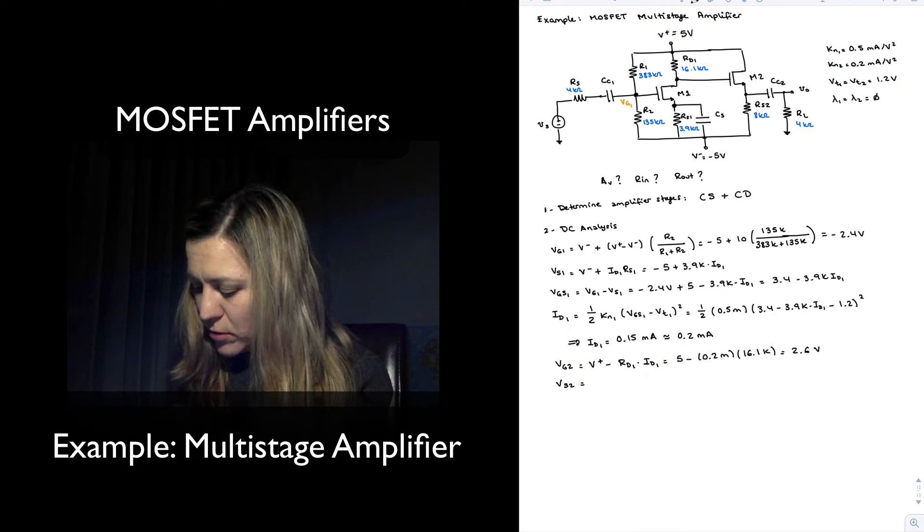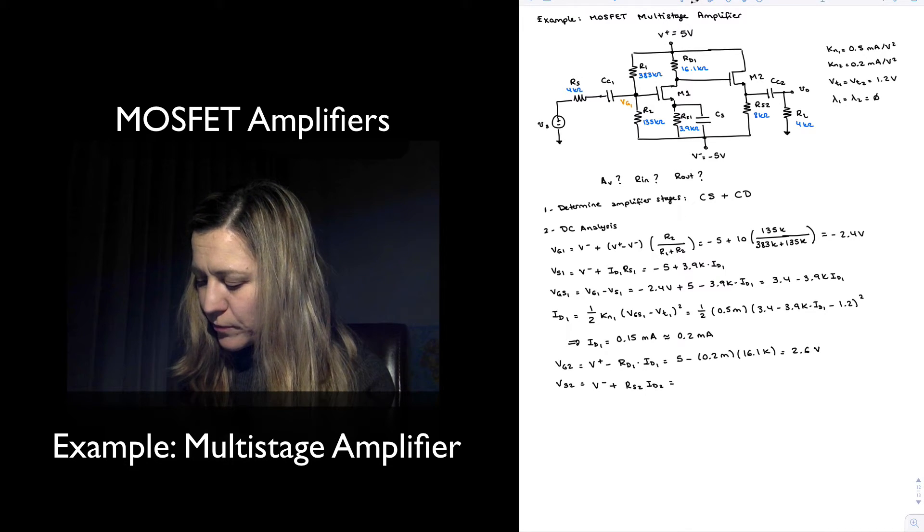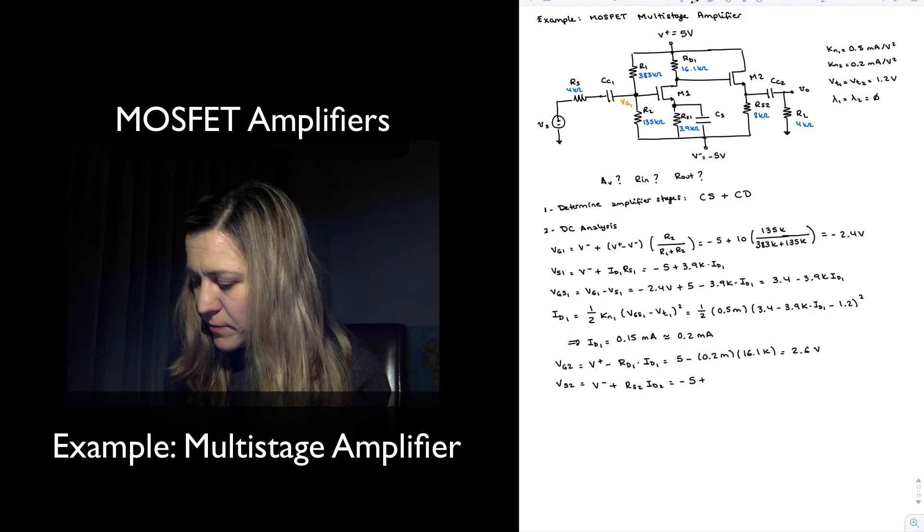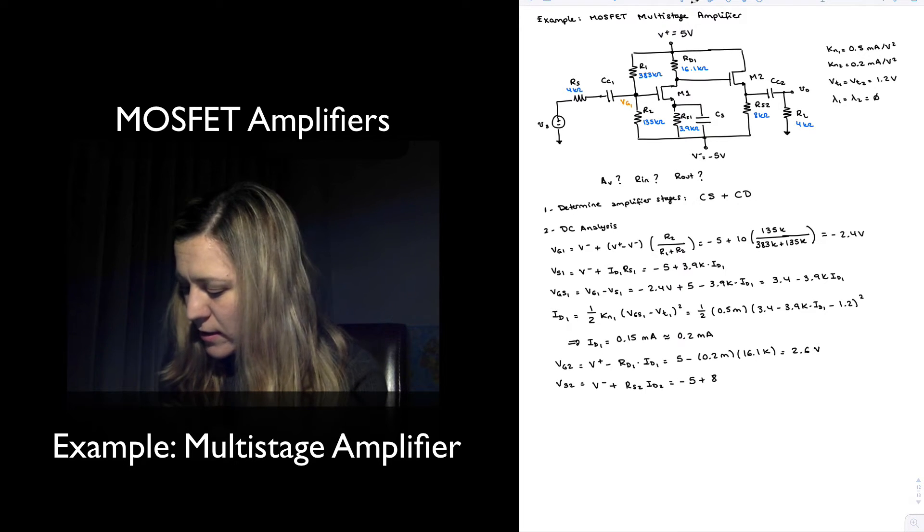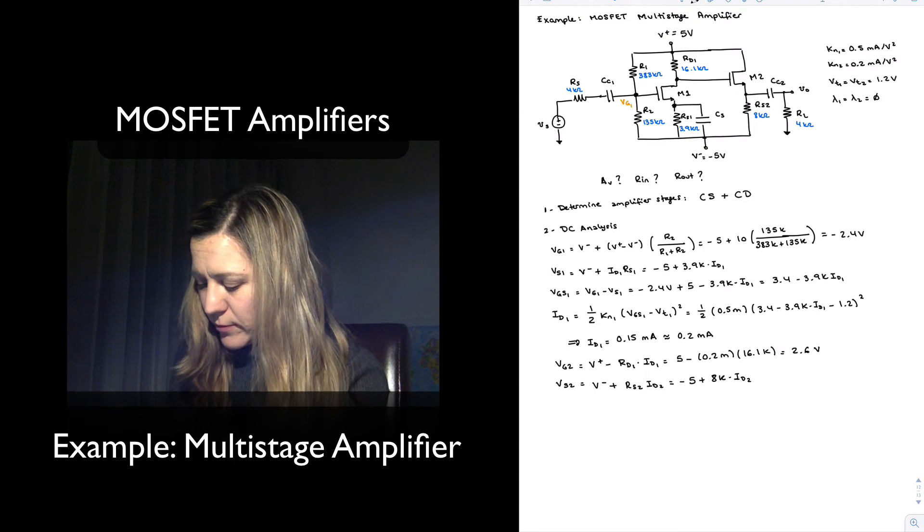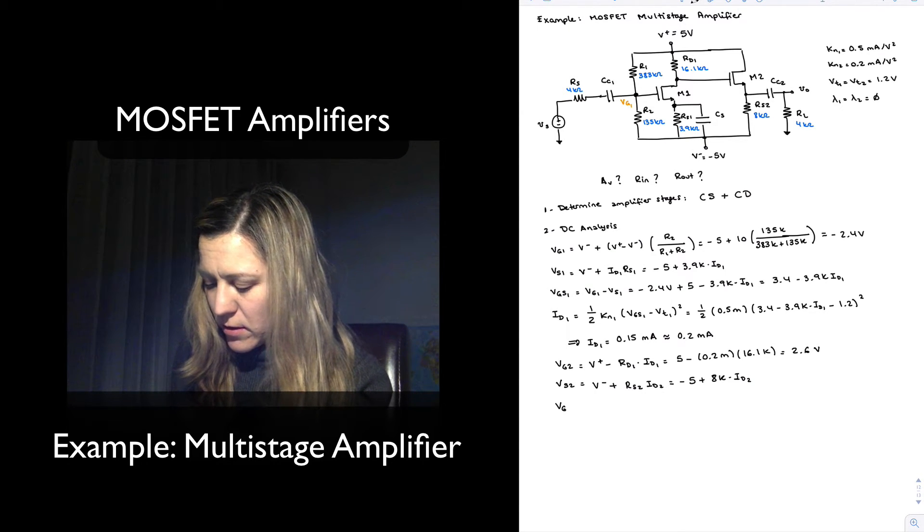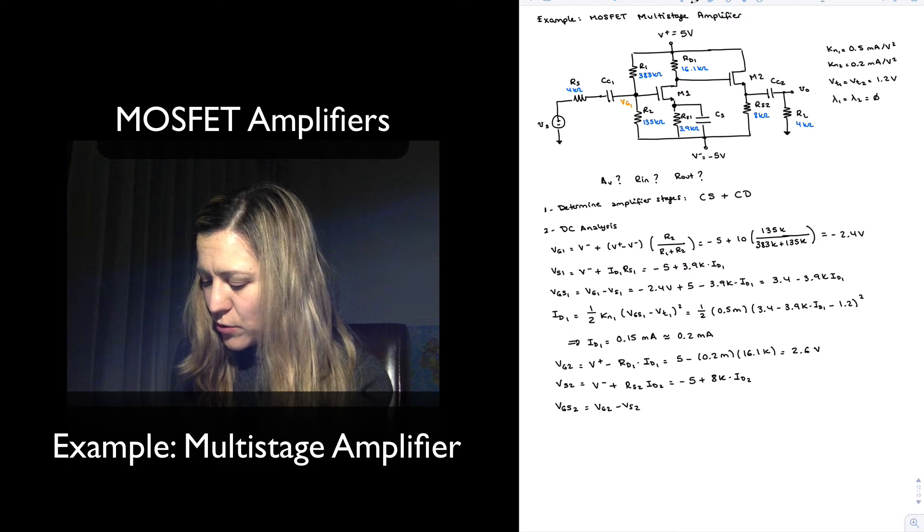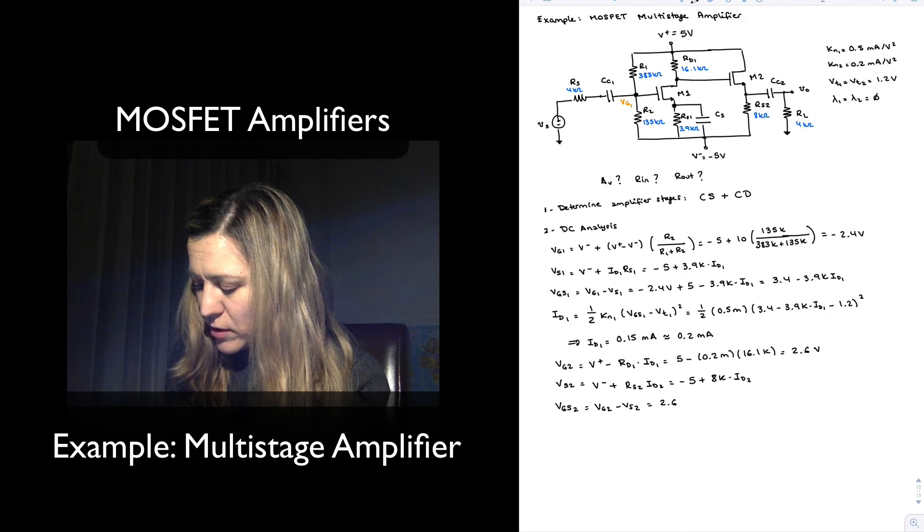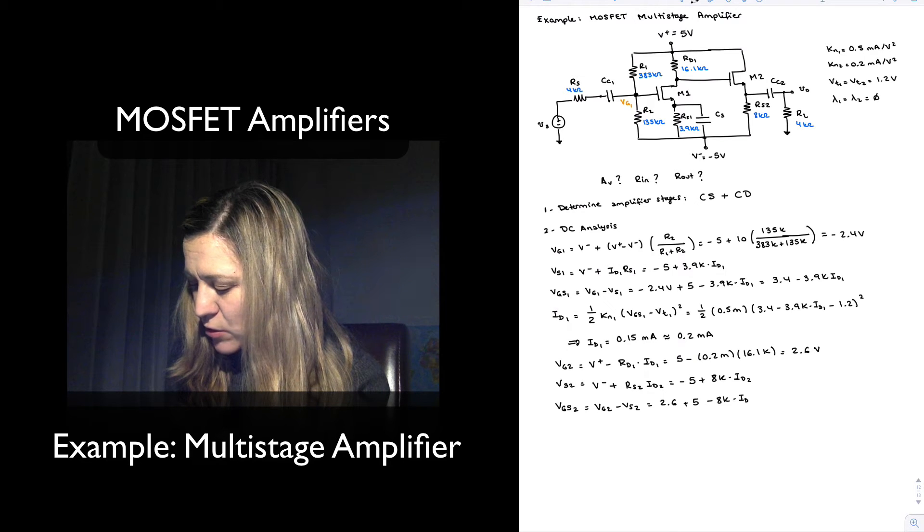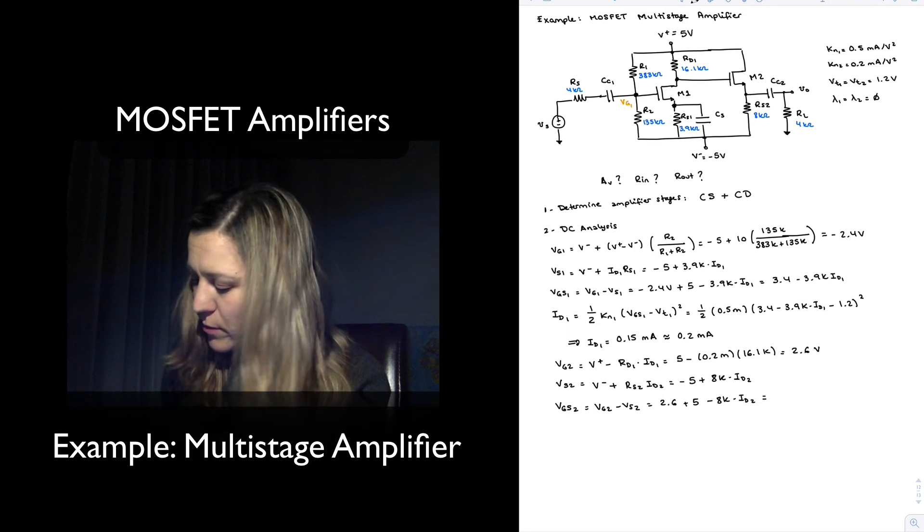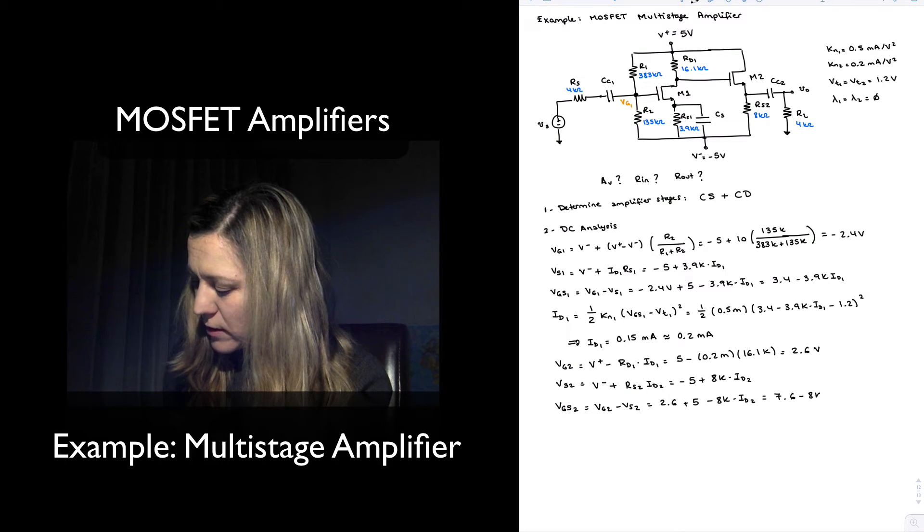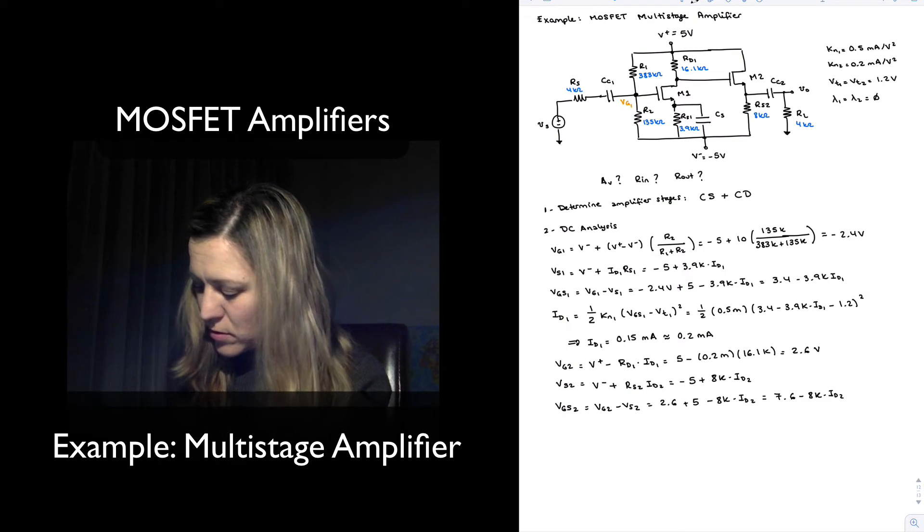My VS2 is going to be equal to V minus plus RS2 times ID2, or negative 5 plus 8k times ID2. So with that I can get an expression for VGS2, which is going to be VG2 minus VS2, or 2.6 minus minus 5, which makes plus 5 minus 8k times ID2, or 7.6 minus 8k times ID2.